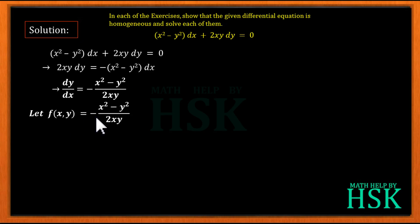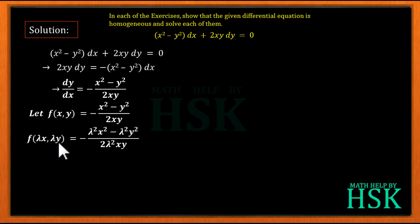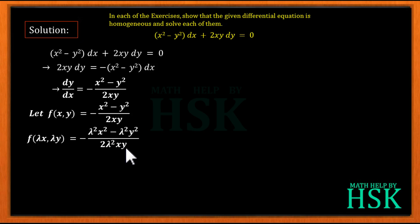Next, we assume f(x, y) equals minus (x² minus y²) upon 2xy, and we calculate the value of f(λx, λy). Replacing x by λx and y by λy, we get minus (λ²x² minus λ²y²) upon 2·λx·λy, which gives us minus (λ²x² minus λ²y²) upon 2λ²xy.